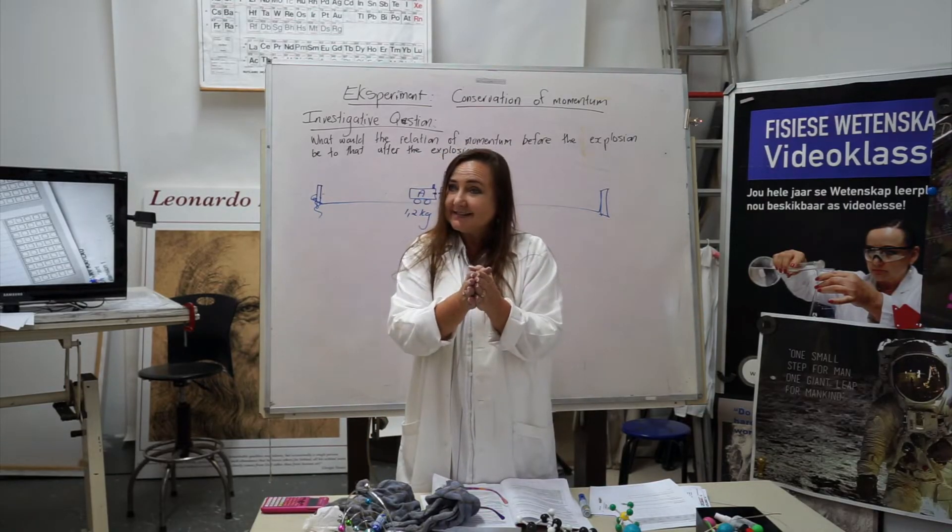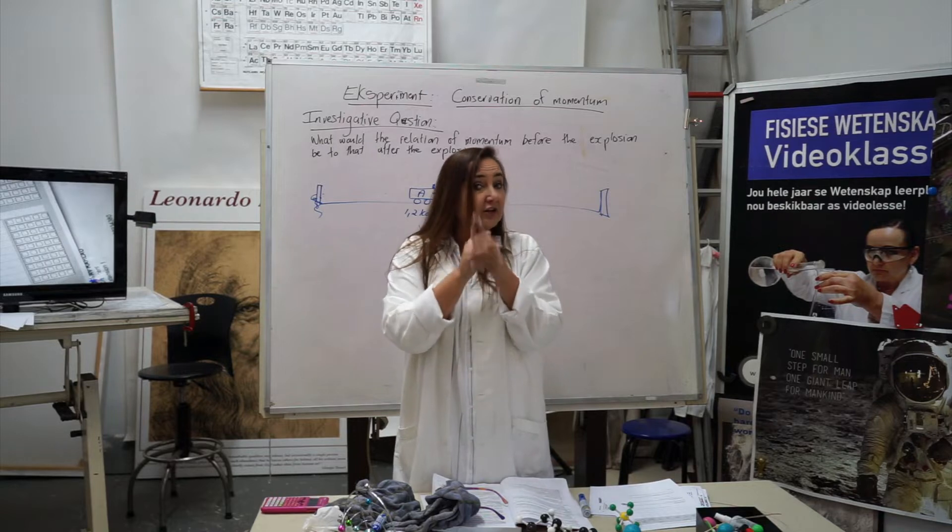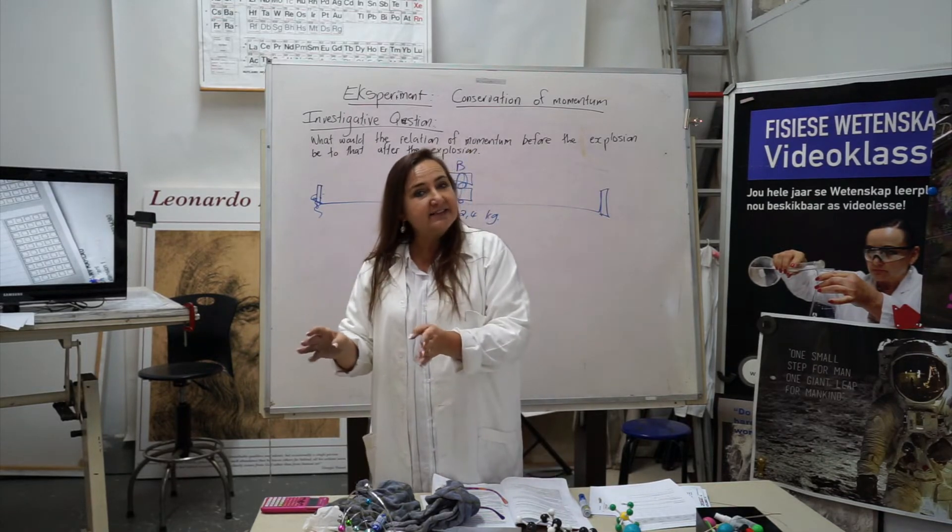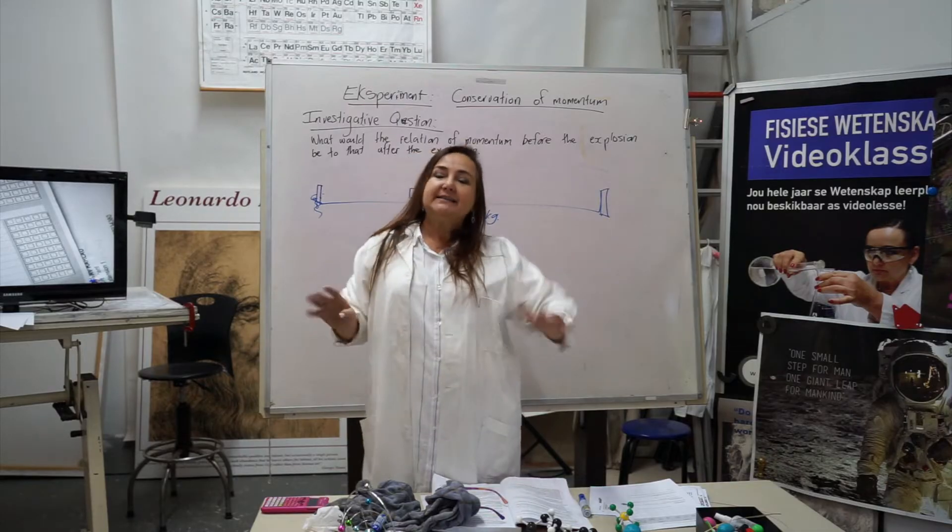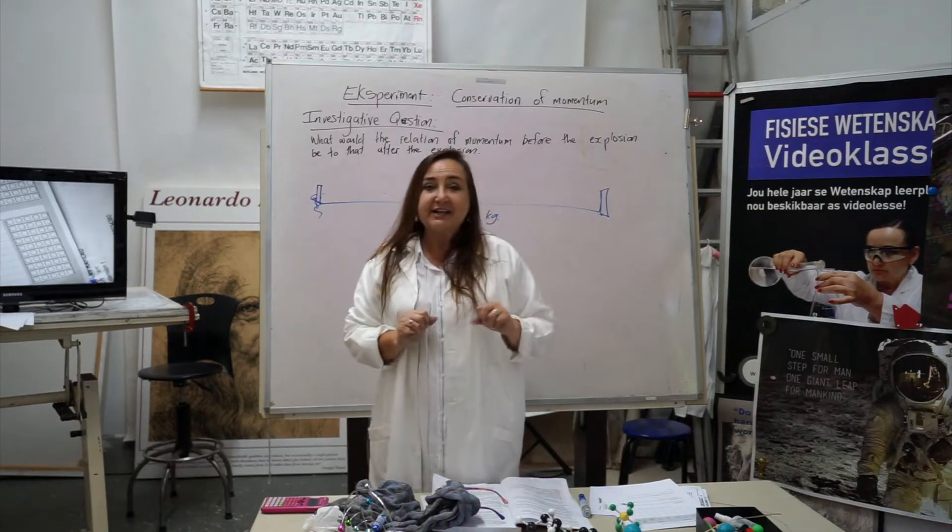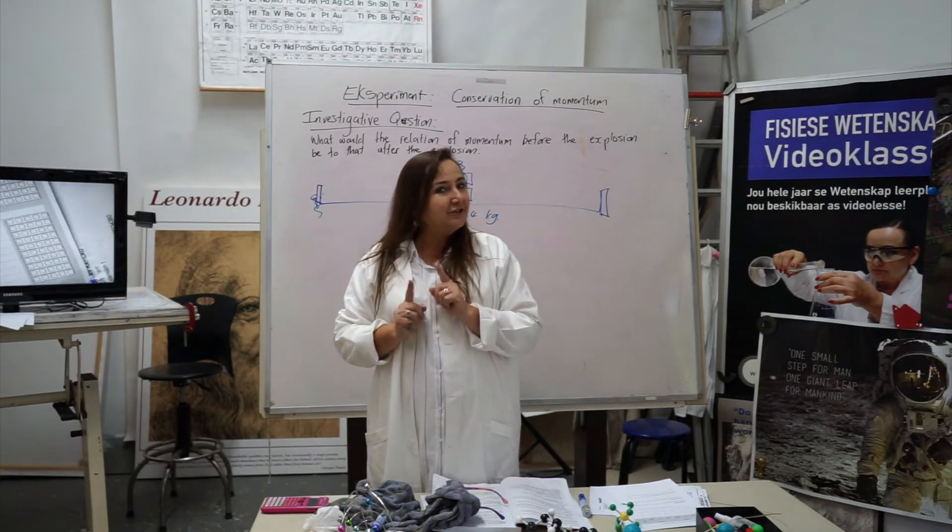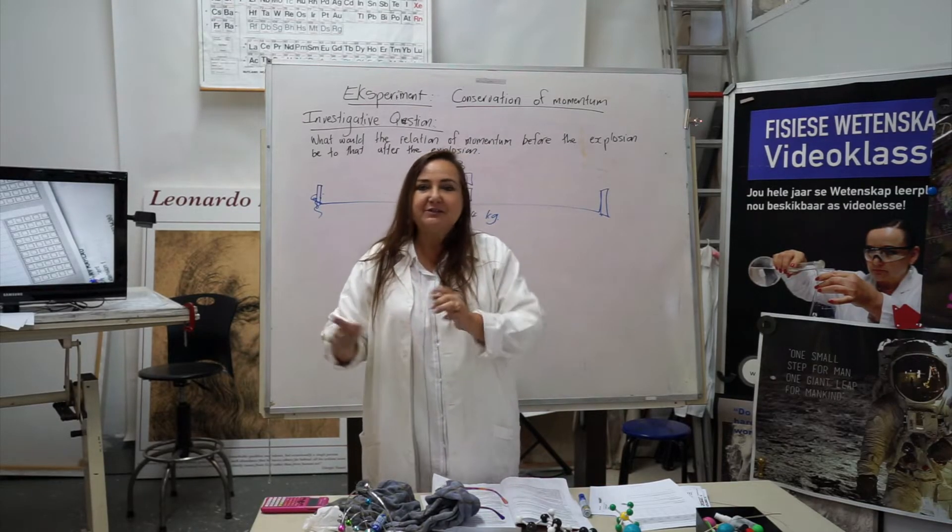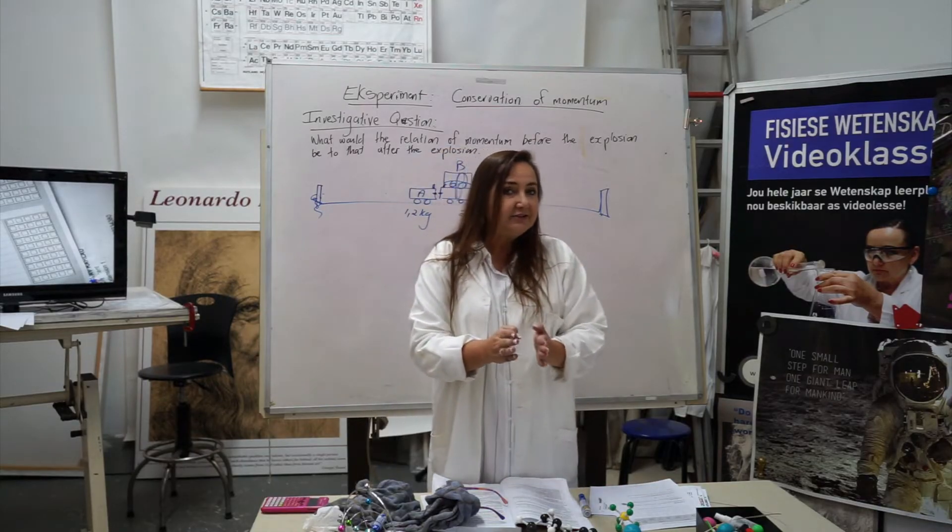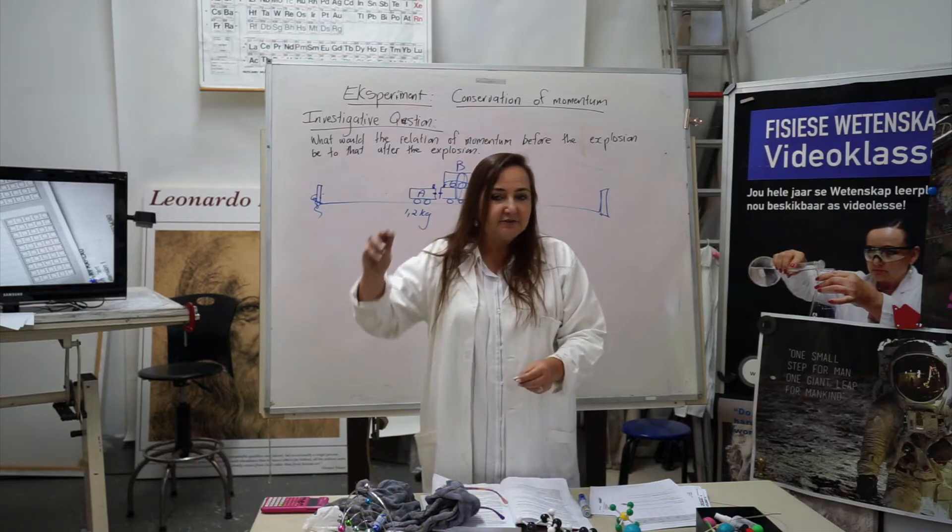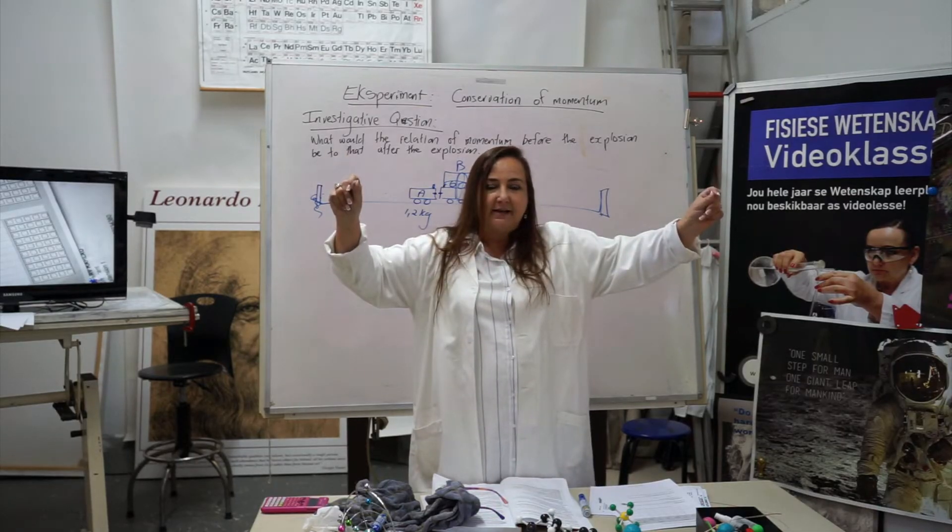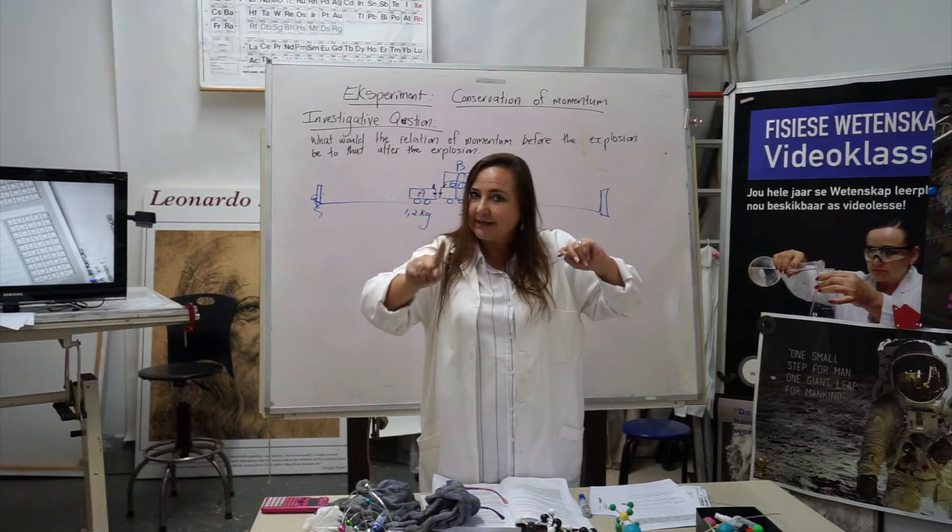So you've got the mass, but now we need the velocity. Now you could either do it with using a ticket timer, but with me, with our school, what we do is, we kind of like, I don't say cheat, but there's a trick to this. So what we do is, we move the two trolleys until you don't hear doosh, doosh, but you just work, bam. Now they hit at the same time.